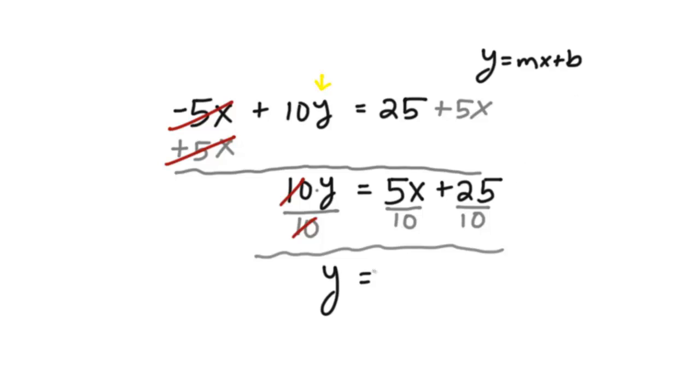We have 5x over 10. Guess what? That's just 1 half, because 5 goes into 10 two times, so 1 half of x. You can rewrite it like that, okay?